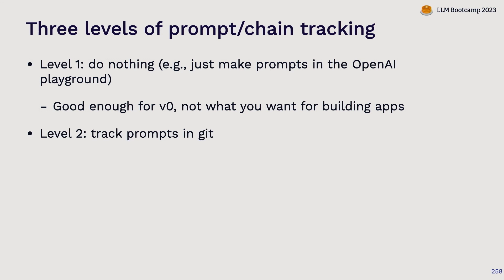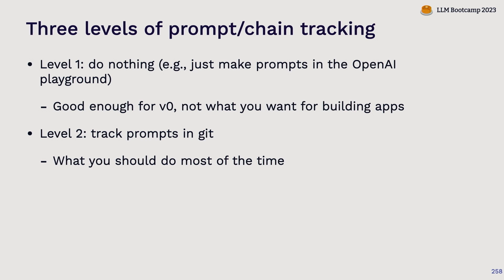Level two — what I see most people graduate to — is just track prompts the way you track the rest of your code: track them in your GitHub repo. I actually think this is what most people should be doing. Save your prompt as a text file in your GitHub repo or even as a string in your Python or JavaScript file, and just version control it and collaborate that way. It's slightly better to save them as a text file than as a string in code because it makes it easier to share with non-technical folks on your team. Level three — becoming more common but still not very common — is to track prompts in a specialized tool for tracking prompts.